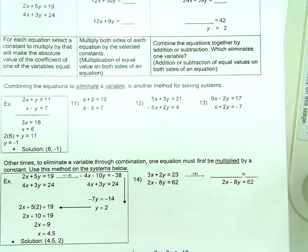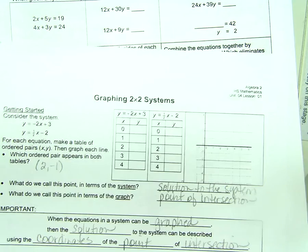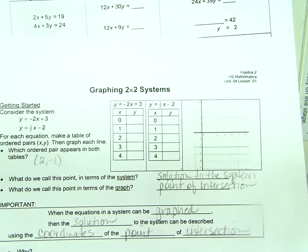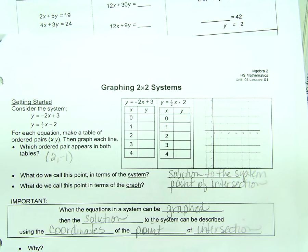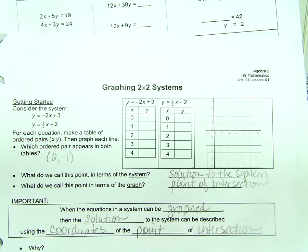What ways do we know to solve a system of equations? Graphing. And what are we looking for when we graph a system of equations? The point of intersection. And what if there's not a point of intersection? Then there are no solutions. The lines are parallel, and there are no solutions.